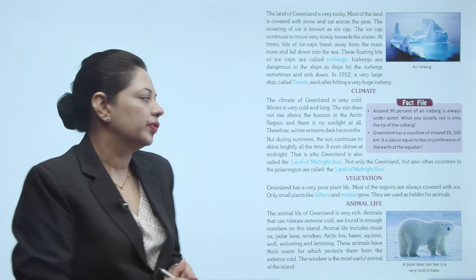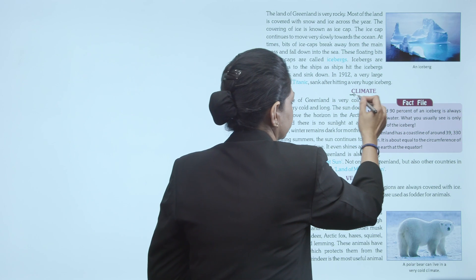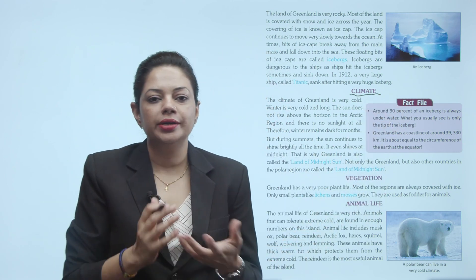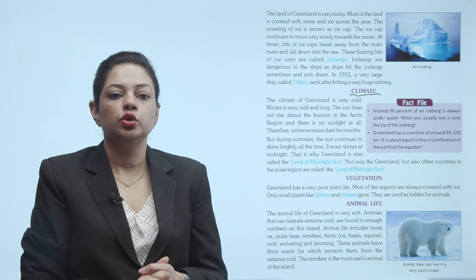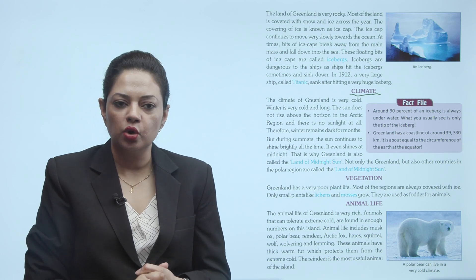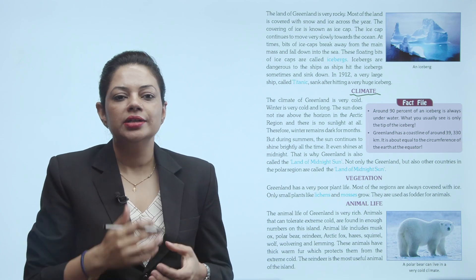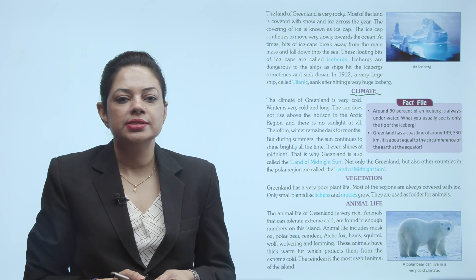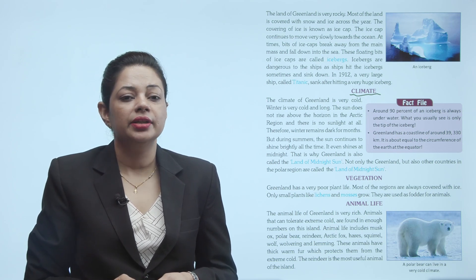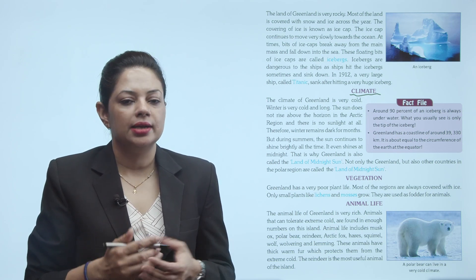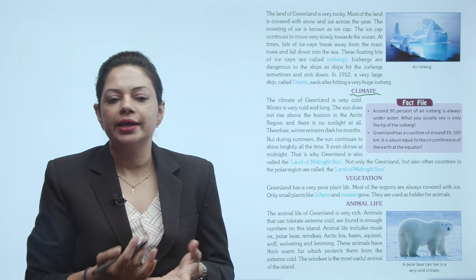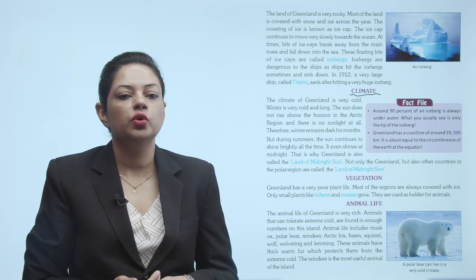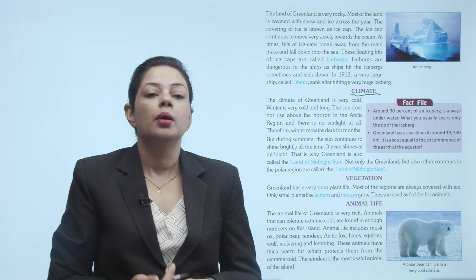Next is the climate of Greenland. Climate kaisa hai? Ab puri time barf se cover rehti hai, toh climate of Greenland is very cold. Winter is very cold and long. The sun does not rise above the horizon in the arctic region and there is no sunlight at all. Yahaan koi sunlight nahi hai — yahaan par sun dikhai nahi deta. Therefore, winter remains dark for months.